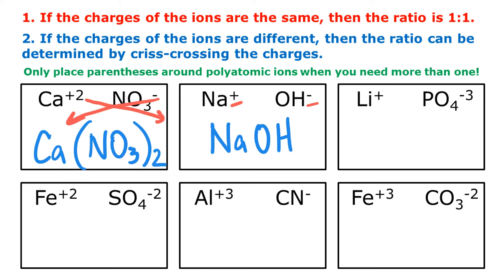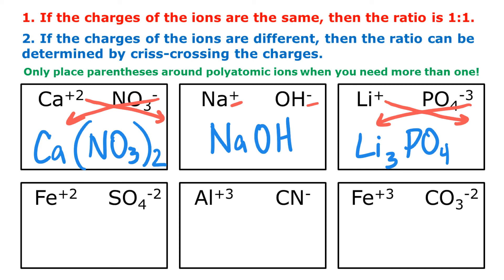My next one has different charges, so I will crisscross. I get Li3 and then PO4 — but I only need one phosphate, so if I only need one of the polyatomic ion, I don't need parentheses. So that's Li3PO4. Next I have a plus two charge on iron and a negative two charge on sulfate. Those cancel, so I need one of each. Since I only need one of my polyatomic ion, I don't need parentheses — so that's FeSO4.